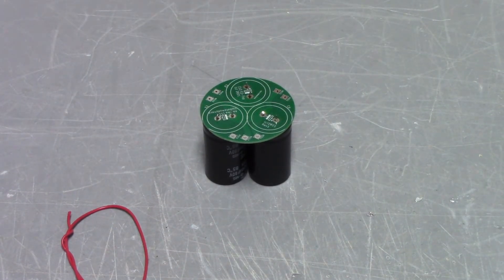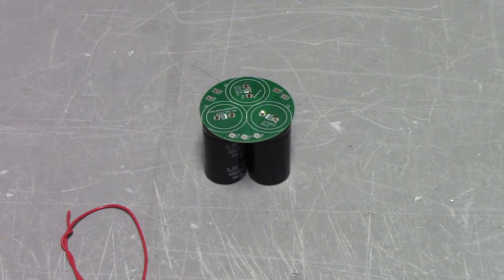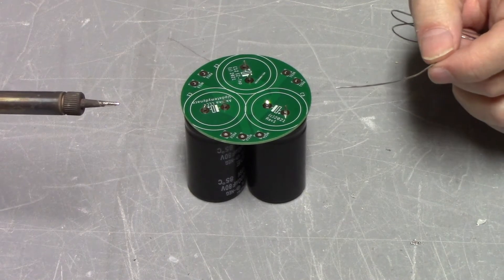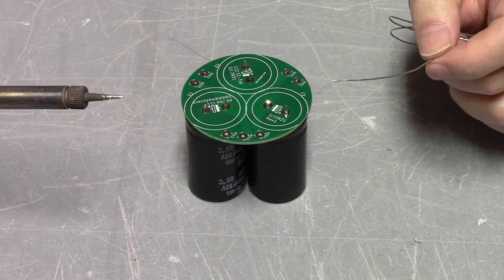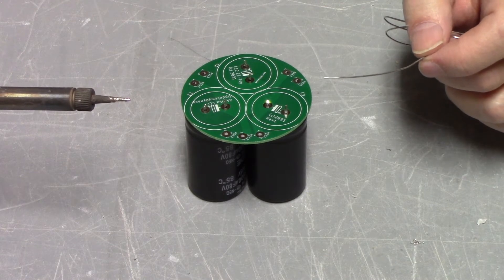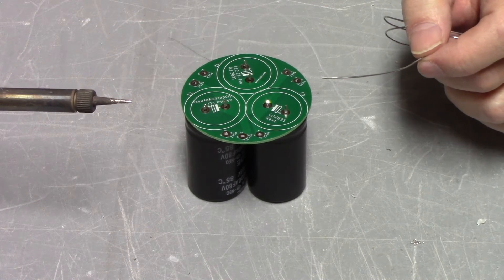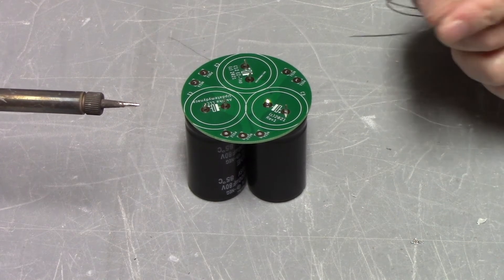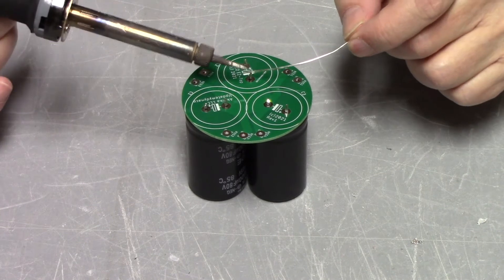The only thing we have to do now is we do have to solder those guys. Let's go for it. So we have now double checked the polarity of the capacitors because, to paraphrase Norm Abram from this old house, he always says measure twice and cut once. I say, check the polarity twice and then solder once. Here we go.